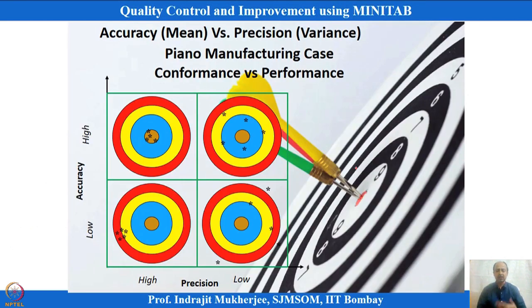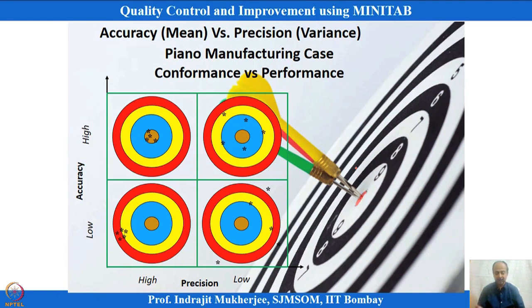One important concept in quality is accuracy and precision. When we talk about accuracy, we are talking about the mean of the data set — the center of gravity or central tendency of the data. Precision refers to variance. Variance is expressed as sigma squared, and its square root gives you the sample standard deviation.